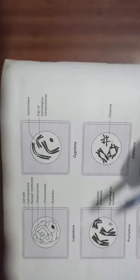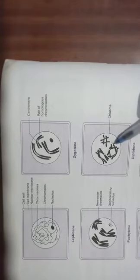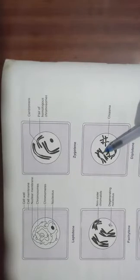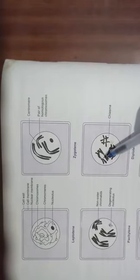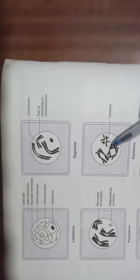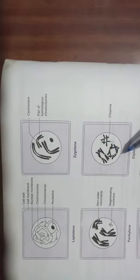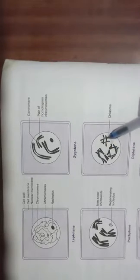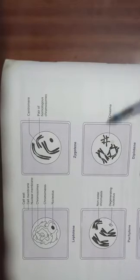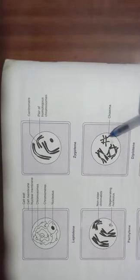The next sub-phase is diplotene. In this phase, you can see that the two chromosomes of each bivalent move away, and homologous chromosomes are left together at one or more points. Those points are called chiasmata.